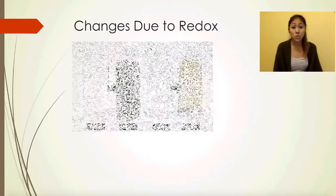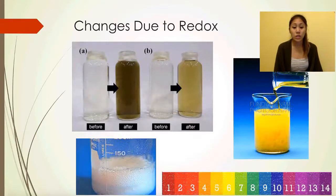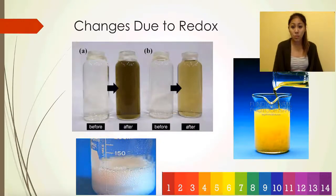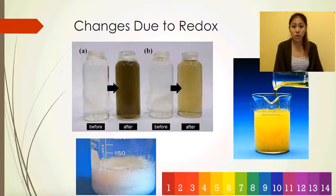Observable changes indicating a redox reaction has occurred include color changes, production of gaseous products, and a change in pH.